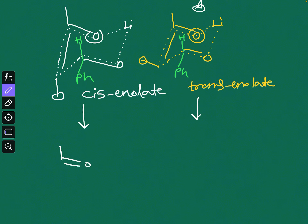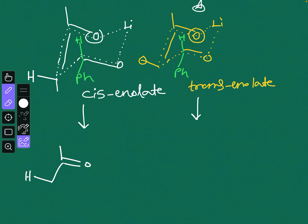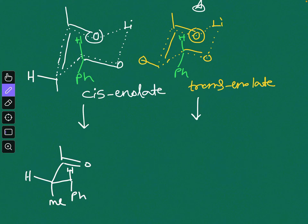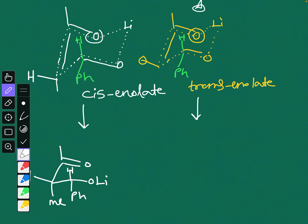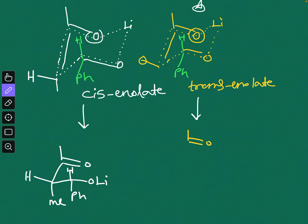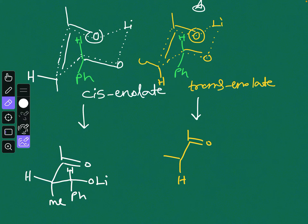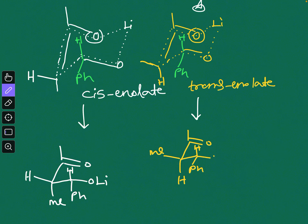From these two transition states you get two different products. From the cis enolate you get a product where you have hydrogen here, methyl here, phenyl and the OH on the other side. For the trans enolate you get a product where the arrangement is: methyl here, hydrogen here — and on the other side the arrangement is the same: hydrogen, phenyl, and the OH group.